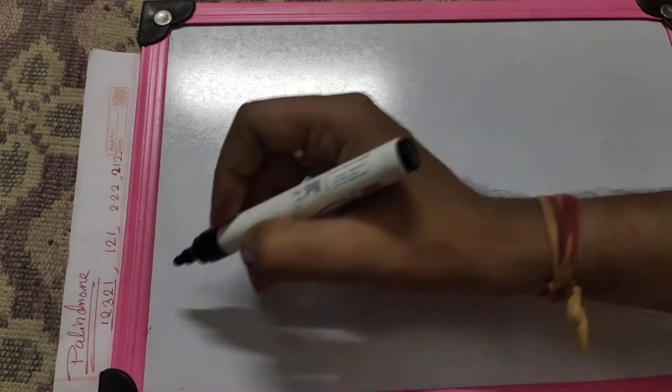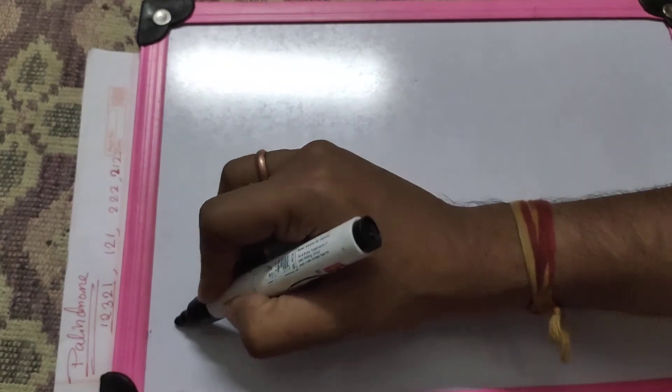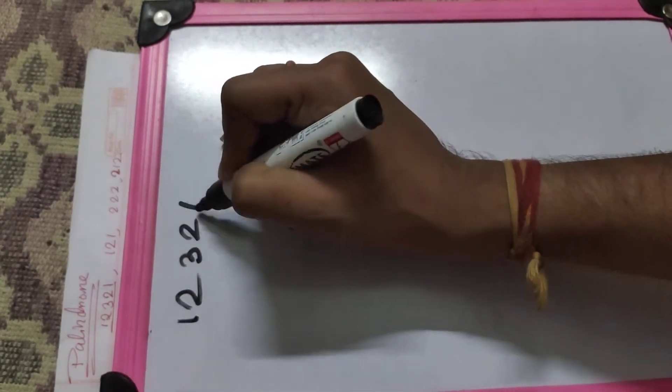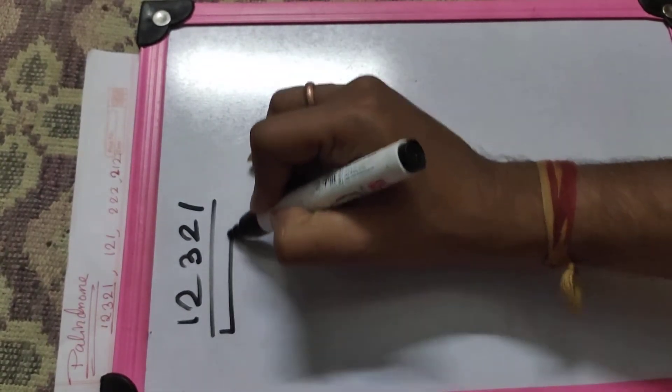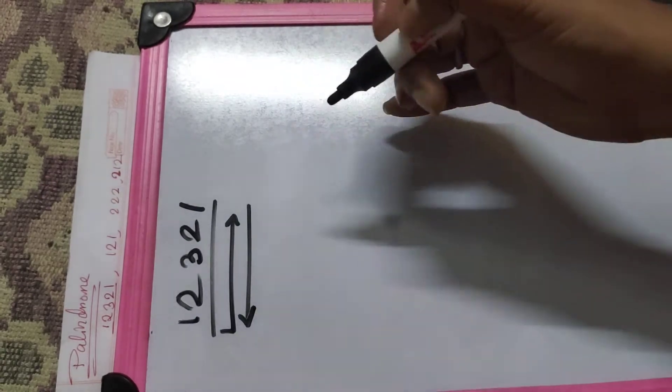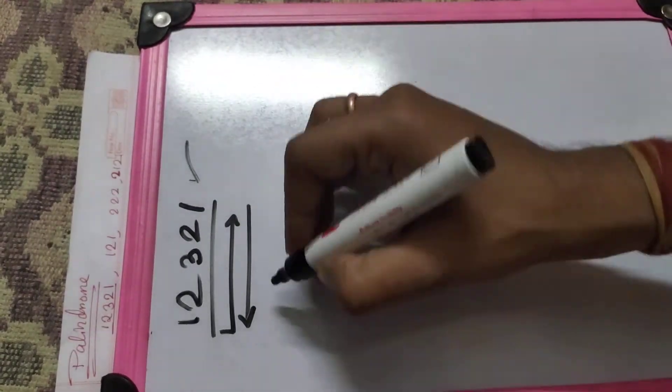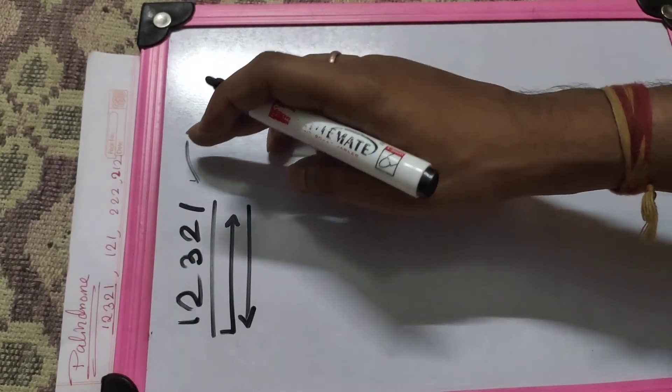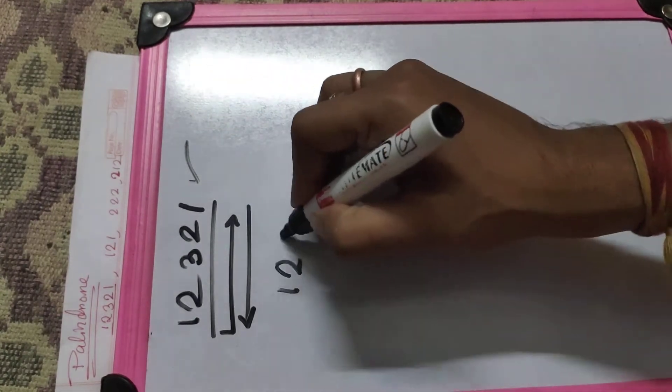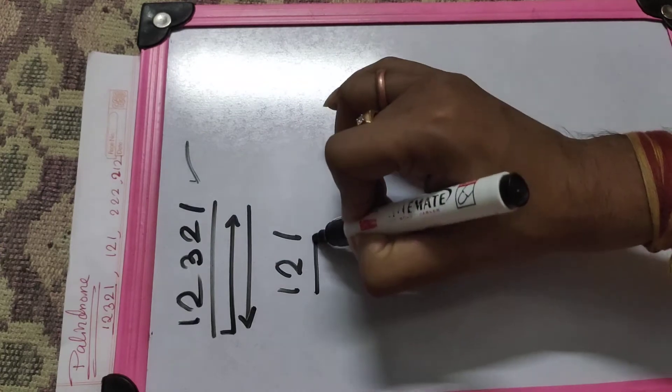The topic is palindrome numbers. A palindrome is a number like 12321 - from start to end or end to start, it looks the same. It is a palindrome number if we read it one by one, starting from the beginning or from the end, both sides the value will be the same.